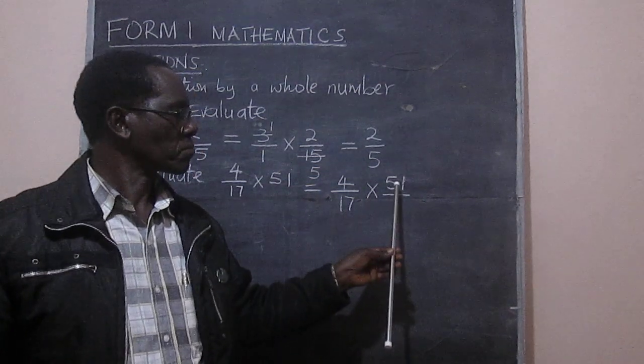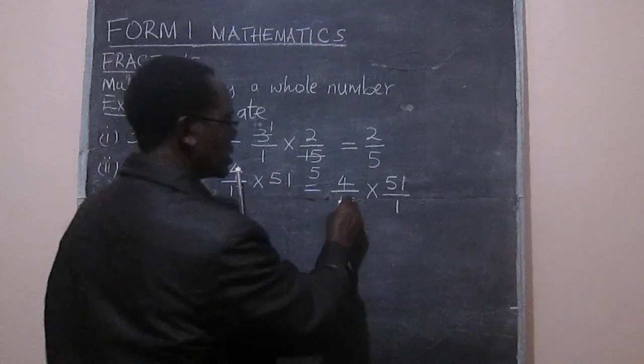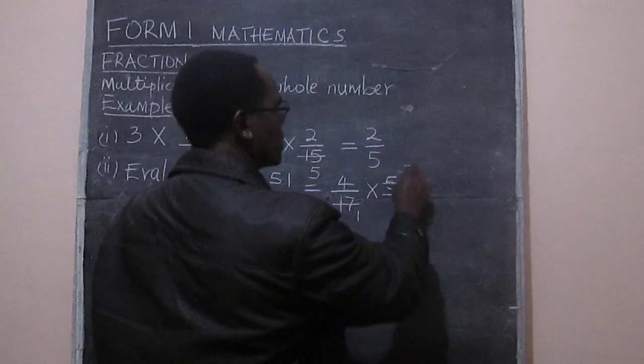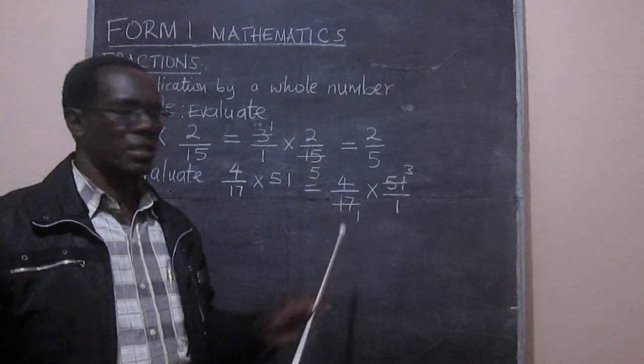17 comes out here 1, 3 times. 3 multiplied by 17 is 51, and that's why we have divided the way we have.